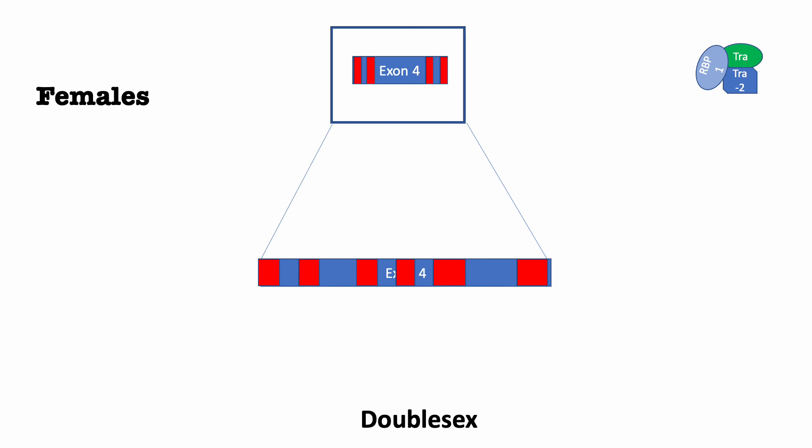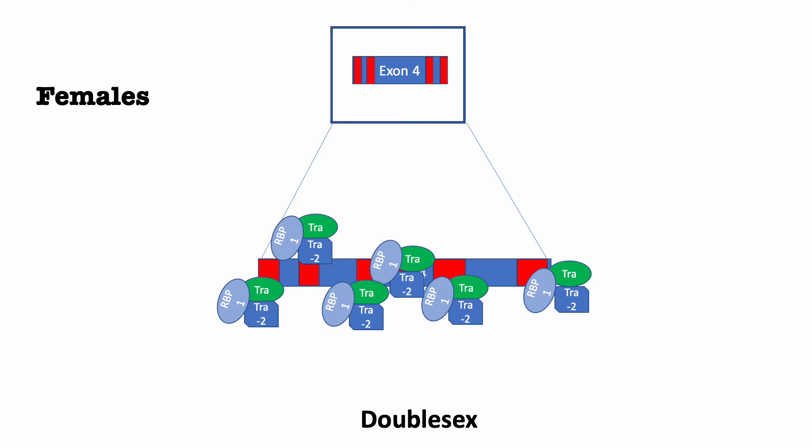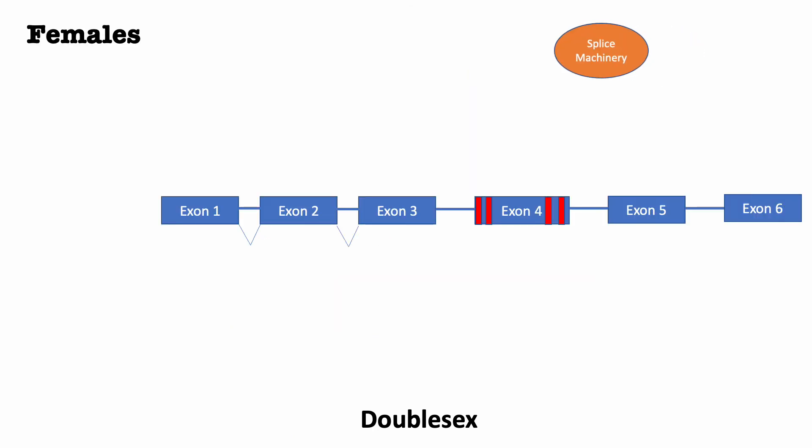The female-specific version of transformer protein recruits and promotes the binding of RBP1 and transformer 2 to form heterotrimeric protein complexes on each of the six copies of the exon splice enhancer found on exon 4. They then recruit the splice machinery to the 3' splice site that was otherwise weak ahead of the exon. As a result, the fourth exon is then included in the final double-sex mRNA and the transcript is polyadenylated after that fourth exon.